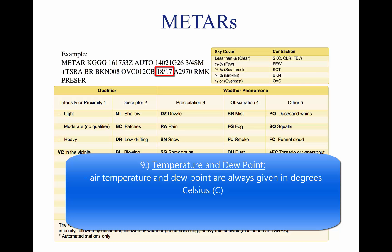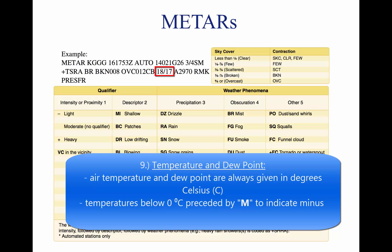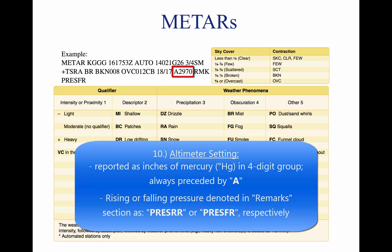Nine, temperature and dew point — 18/17. The air temperature and dew point are always given in degrees Celsius. Temperatures below zero degrees Celsius are preceded by the letter M to indicate minus. Ten, altimeter setting — A2970, reported as inches of mercury (HG) in a four-digit number group, always preceded by the letter A. Rising or falling pressure may also be denoted in the remarks section as PRESRR or PRESFR, respectively.